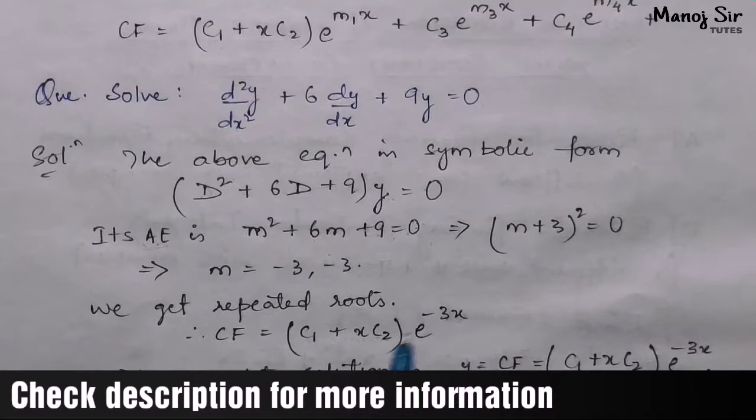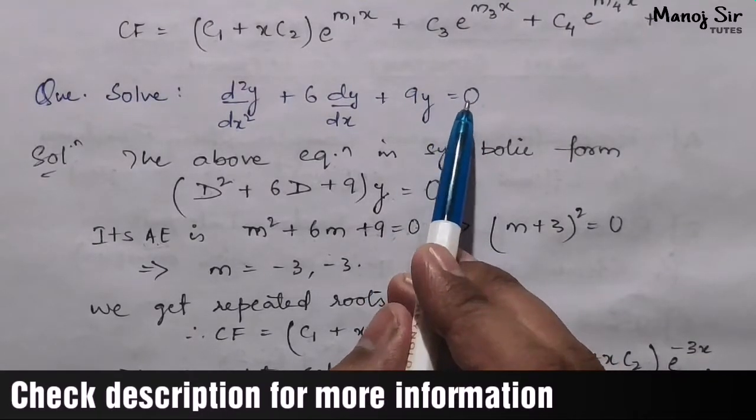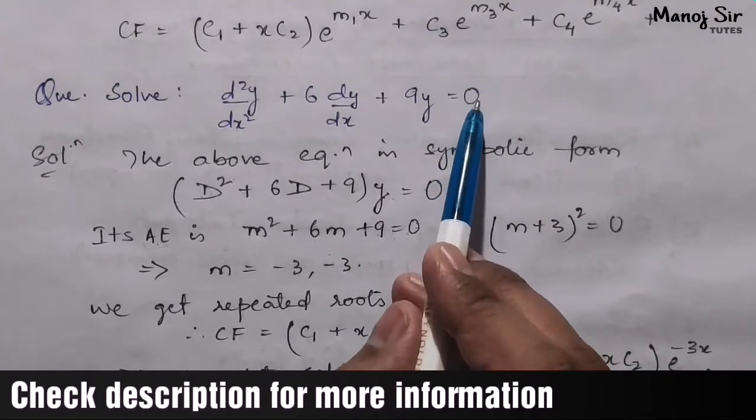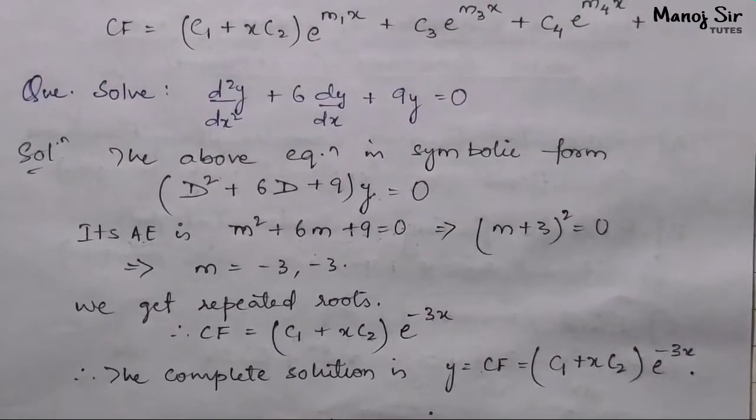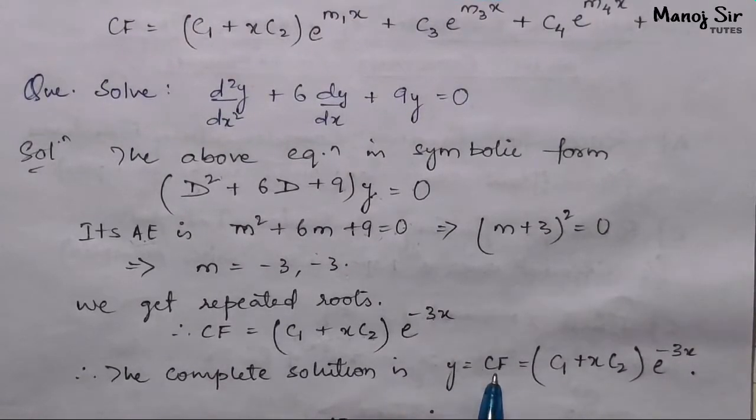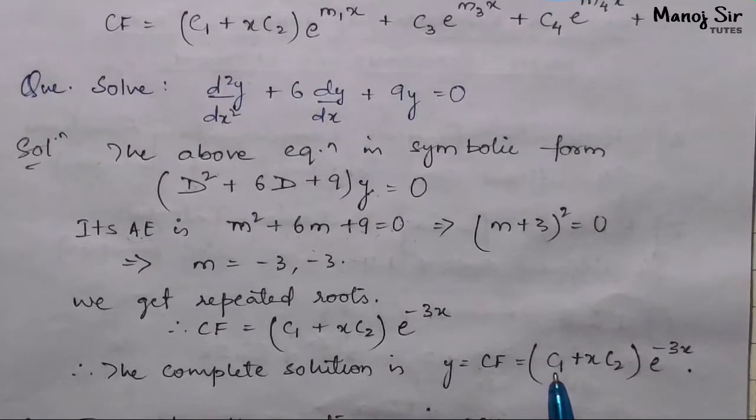I am repeating once again: CF = (c₁ + xc₂)e^(-3x) and this is my CF. Since in the question nothing is given on the right hand side - that is 0 - therefore the complete solution is y = CF, that is the complementary function, which equals (c₁ + xc₂)e^(-3x).